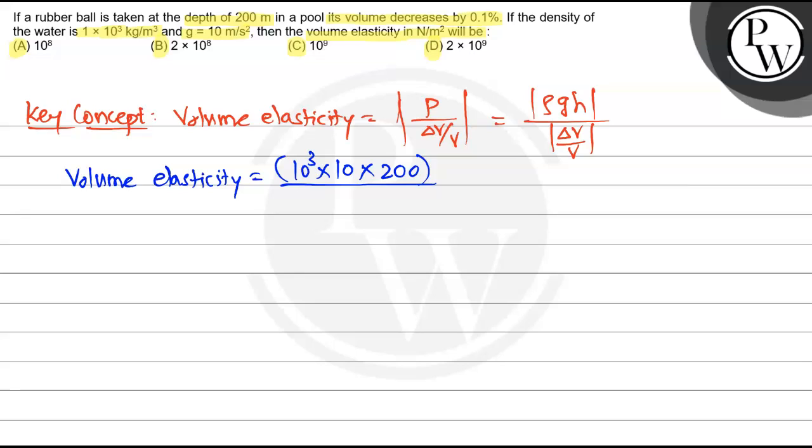Decrease means it already has minus, decrease means negative sign. So it is 0.1%, so 0.1 divided by 100.